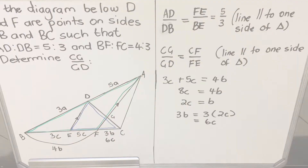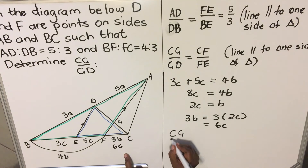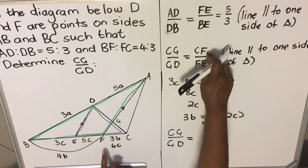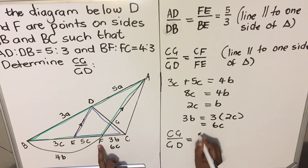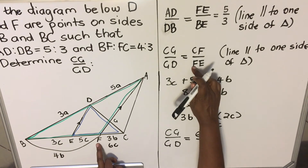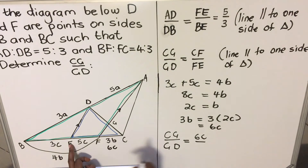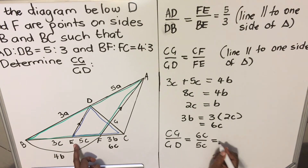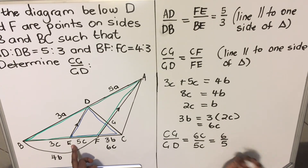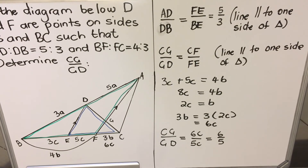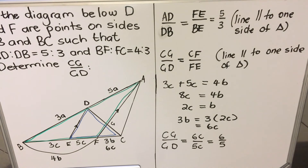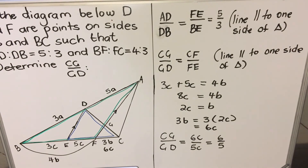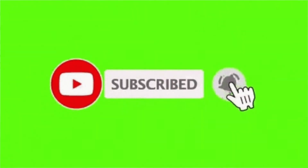We are closer to our answer. CG over GD equals CF over FE. My CF is 6C and my FE is 5C. So the ratio is 6 is to 5. This is how you get this ratio. It needs you to practice — the more you do, the better you'll get. I hope you practice, practice, practice. This is the end of our lesson. If you have not subscribed, please do. Thank you for watching.